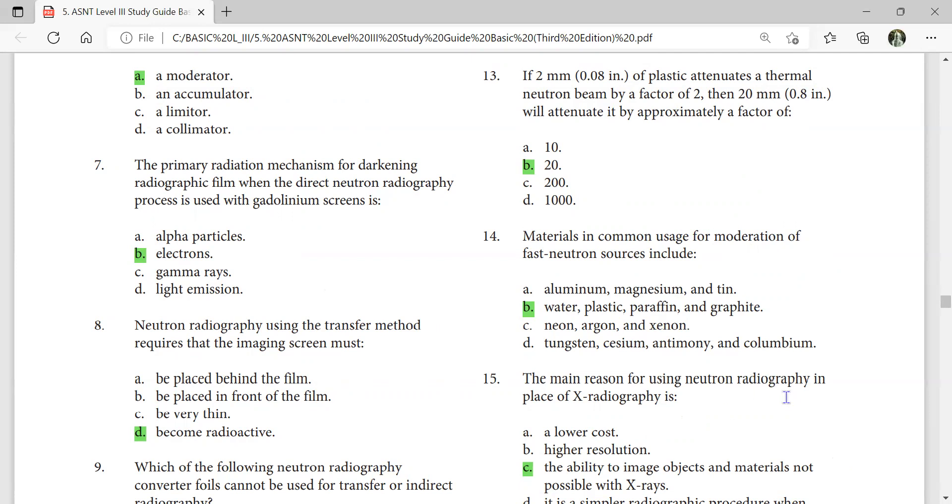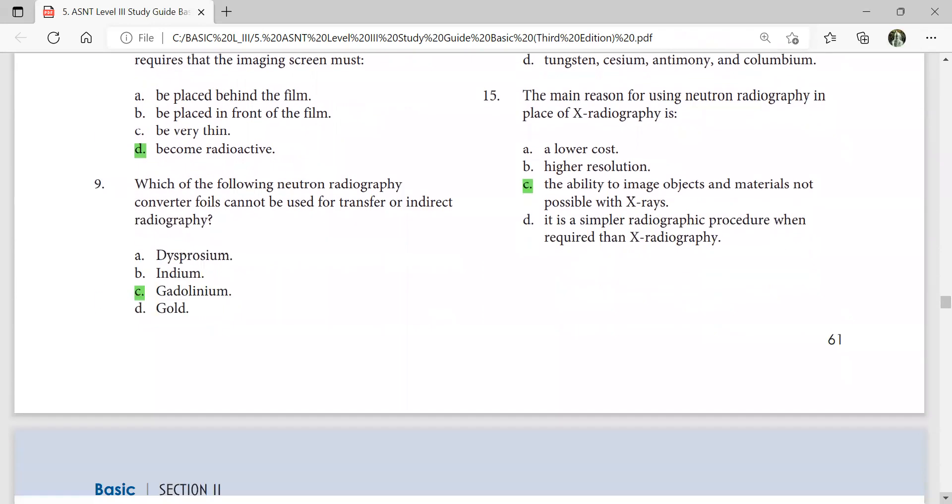The main reason for using neutron radiography in place of x-radiography is the ability to image objects and materials not possible with x-rays. Which of the following neutron radiography converter foil cannot be used for transfer or indirect radiography? Gadolinium is for direct radiography.